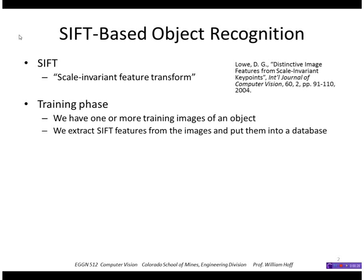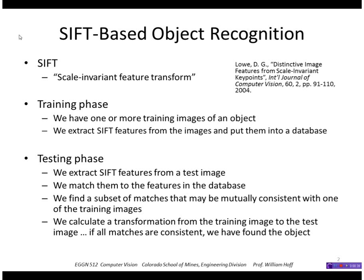Object recognition involves a training phase where we have one or more training images of an object. We extract SIFT features from those images and put them into a database. In the testing phase, we extract SIFT features from a test image, match them to features in the database, find a subset of matches that may be mutually consistent, and calculate a transformation from the training image to the test image.